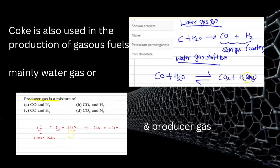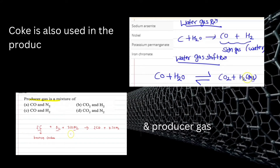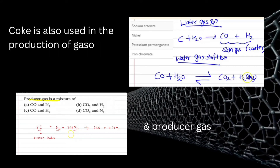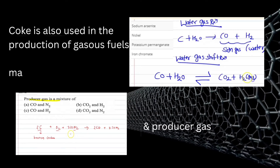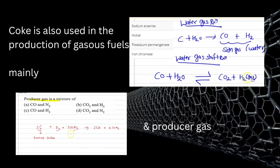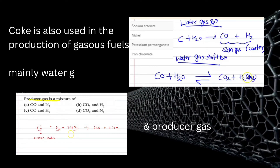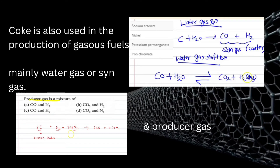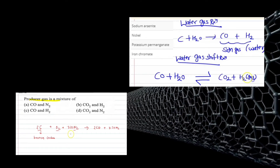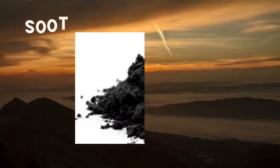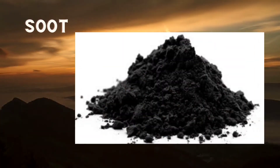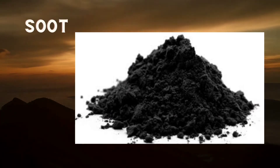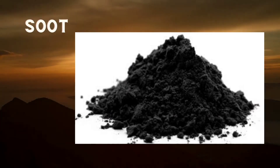Water gas is a combination of carbon monoxide and hydrogen, while producer gas is a combination of carbon monoxide and sometimes carbon dioxide with nitrogen. Both gases are either used as fuel or used in other processes. For example, hydrogen can be used in the Haber process.